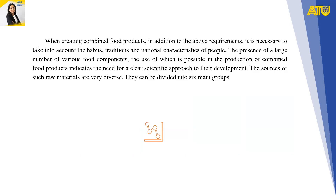When creating combined food products, in addition to the above requirements, it is necessary to take into account the habits, traditions and national characteristics of the people. The presence of a large number of various food components whose use is possible in the production of combined food products indicates the need for a clear scientific approach to their development. The sources of such raw materials are very diverse and can be divided into six main groups. The first group includes fruit, berry and vegetable additives used in natural form, as well as in the form of syrups, concentrates or dry mixtures. These additives allow you to adjust the content of vitamins, carbohydrates, minerals and dietary fiber in dairy products.